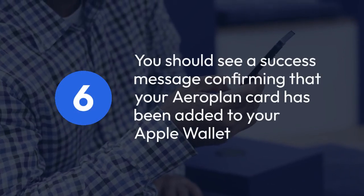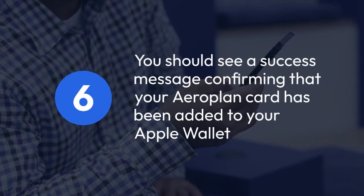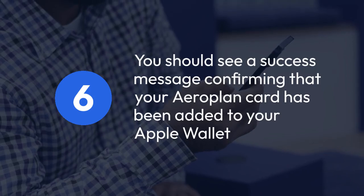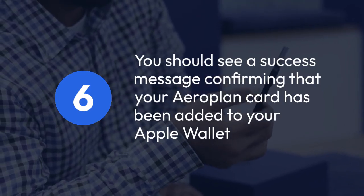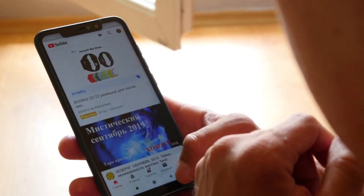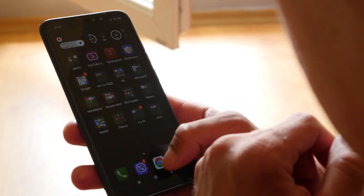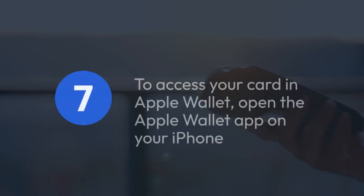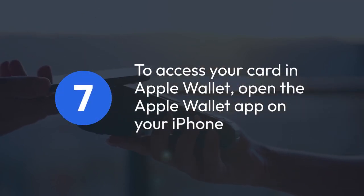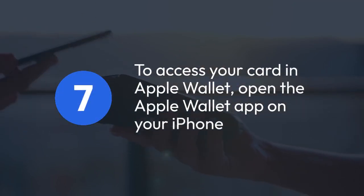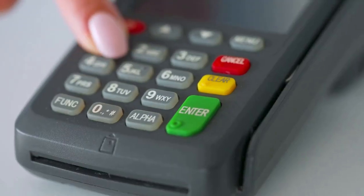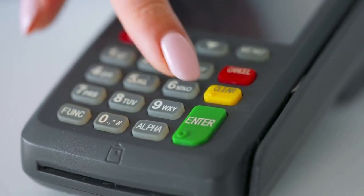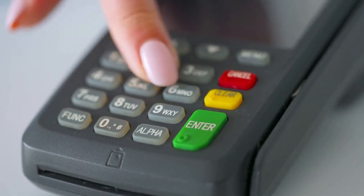Six, after a few seconds or moments, you should see a success message confirming that your airplane card has been added to your Apple Wallet. You'll also likely find your card now listed within the Apple Wallet app itself. Seven, to access your card in Apple Wallet, simply open the Apple Wallet app on your iPhone and you'll see your airplane card amongst your other passes and cards. You can now use this digital version for contactless payments wherever Apple Pay is accepted.